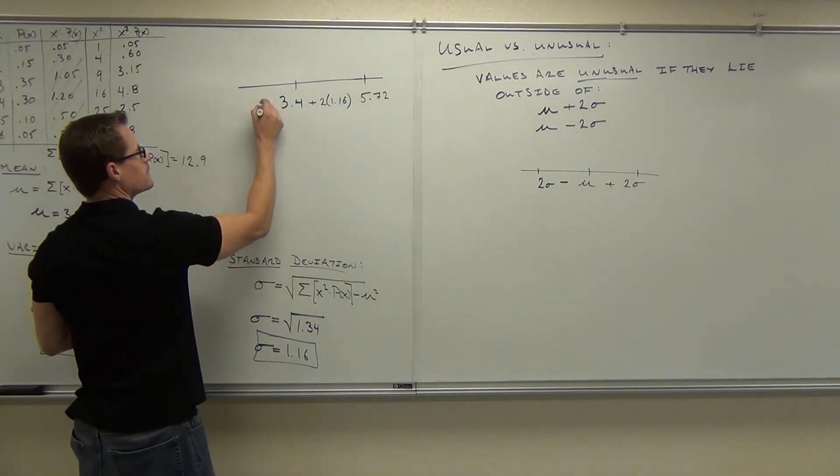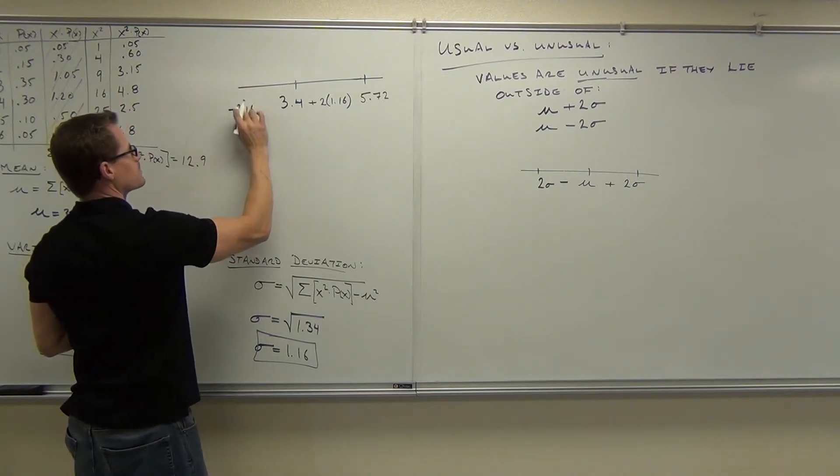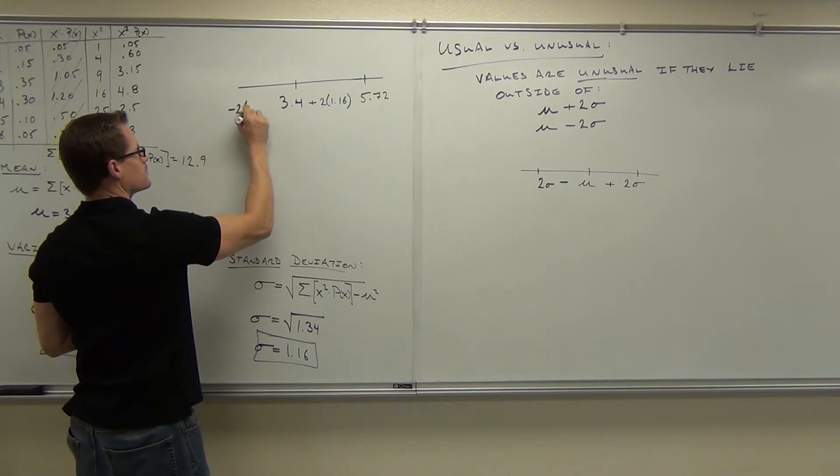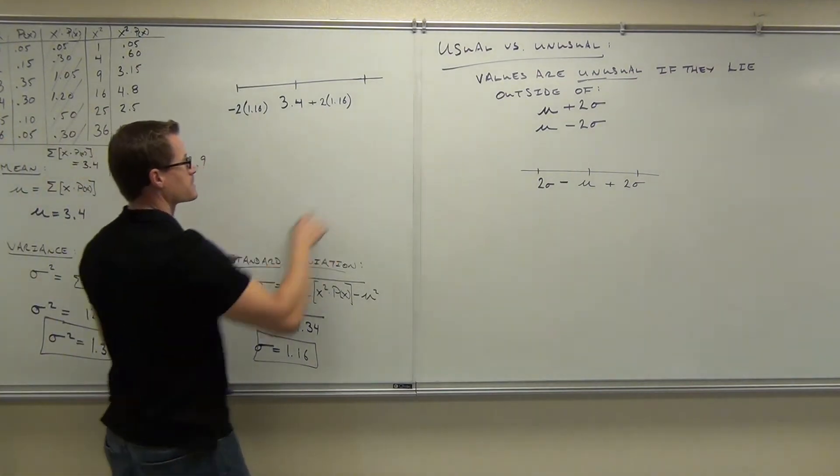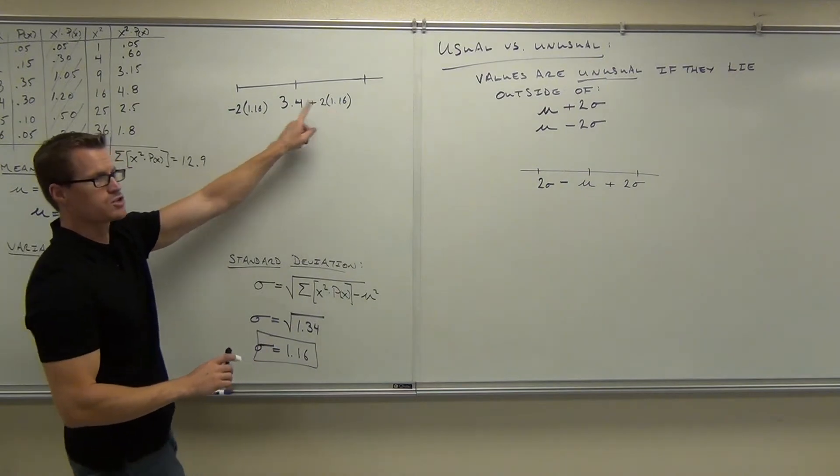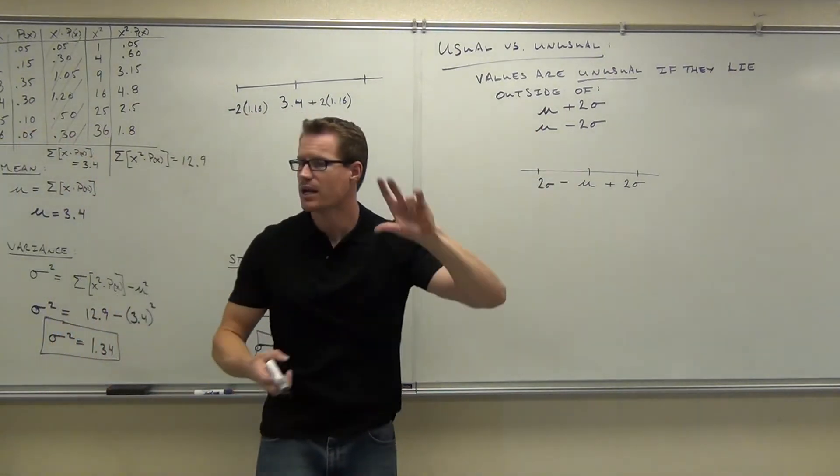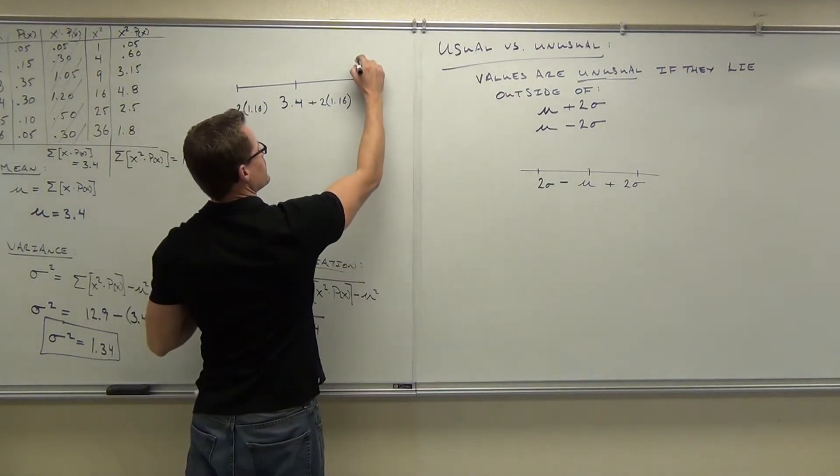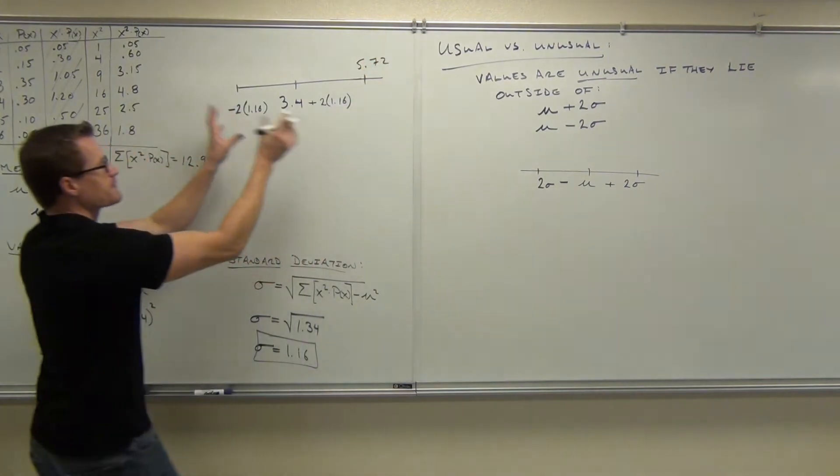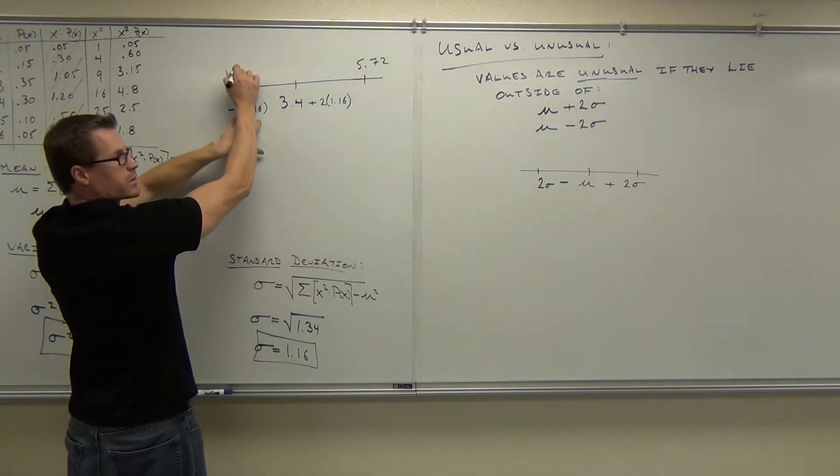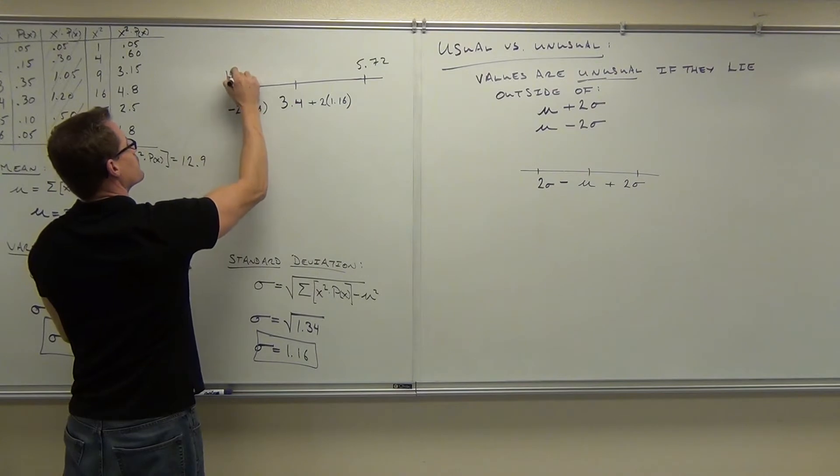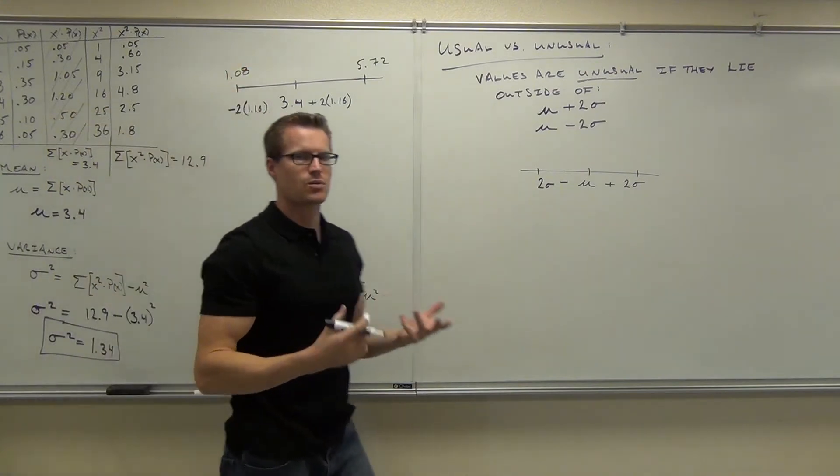Now, if I subtract it, so if I'm subtracting two times 1.16, maybe I'll put these up top so it's not as confusing. So we're adding two times the standard deviations and subtracting two times the standard deviations. That's giving us two standard deviations to the right, two standard deviations to the left. I get 5.72, and to the left-hand side, we're going to take 3.4 minus that. 1.08. That gives us the range of usual values.